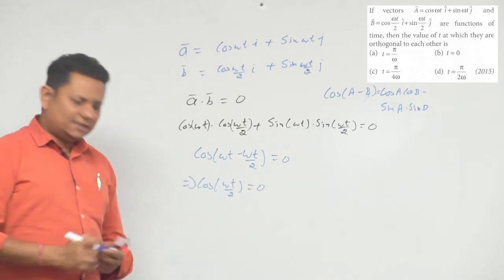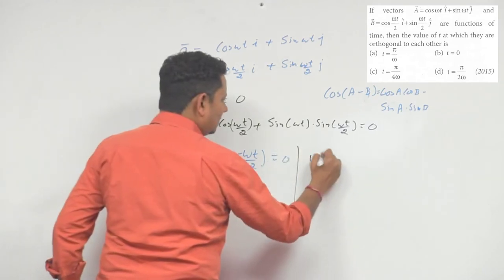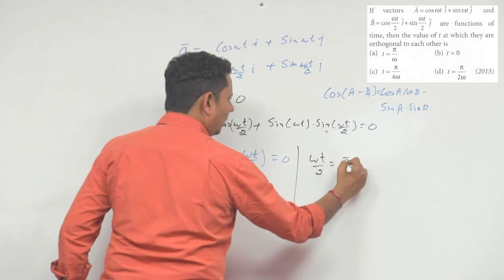Cos कभी भी 0 होएगा इसका simple सा मतलब है कि इस angle की value आपके 90 degree है which implies omega t by 2 is equal to pi by 2.